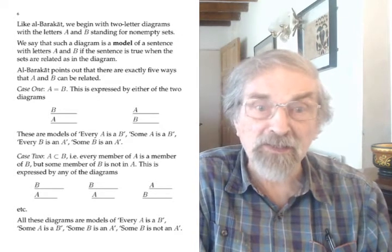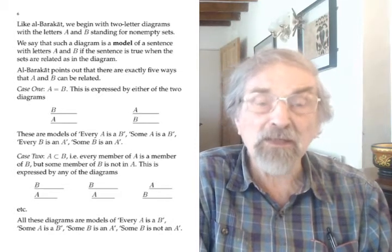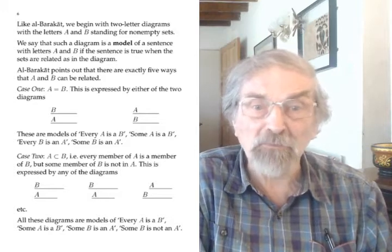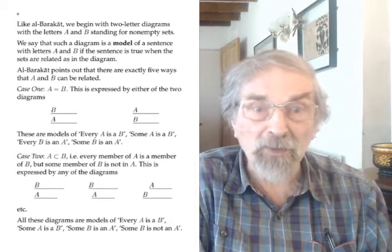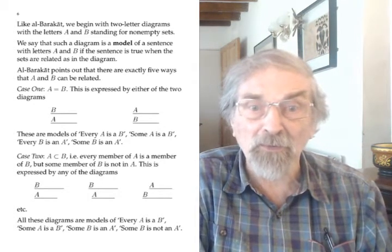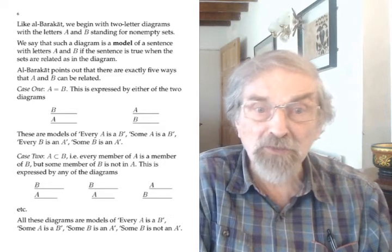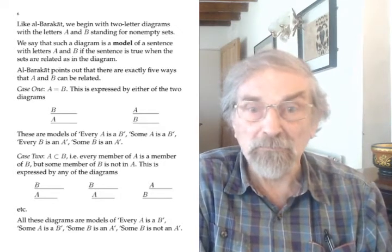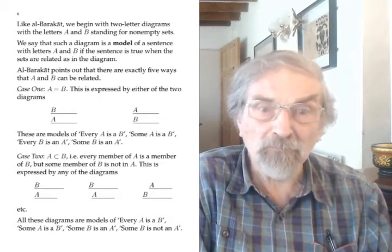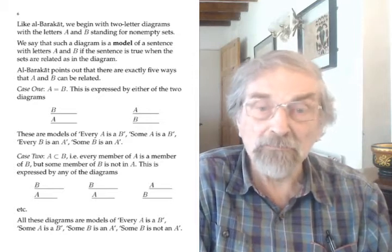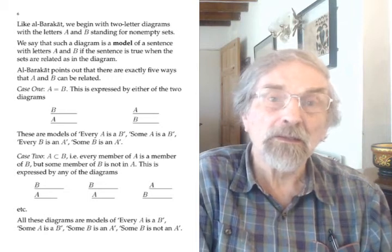The second case is where, as the set theorists say, A is a proper subset of B — every element of A is an element of B but not vice versa. The diagrams show A and B on separate lines; the A line doesn't stick out beyond the B line but the B line does stick out beyond the A line. All of these diagrams are models of 'Every A is a B,' 'Some A is a B,' 'Some B is an A,' and 'Some B is not an A.'